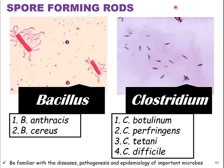Hello and thank you for coming back for part three. So now we're going to talk about the gram-positive spore-forming rods. Another name for a rod shape is bacillus, so the genus Bacillus.